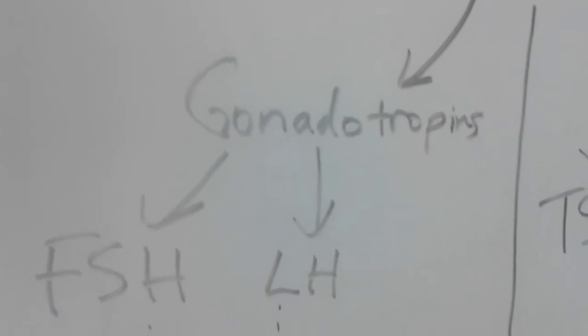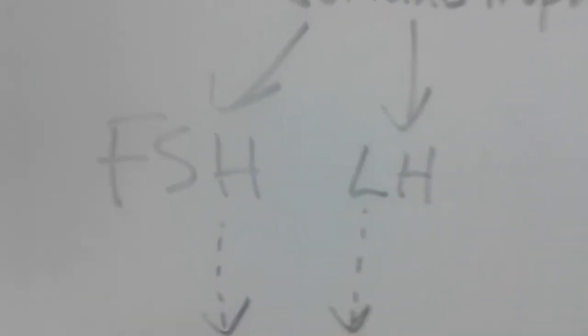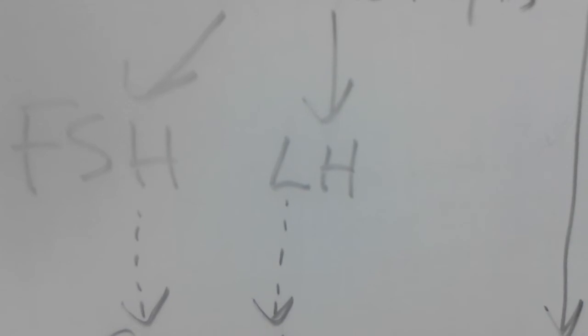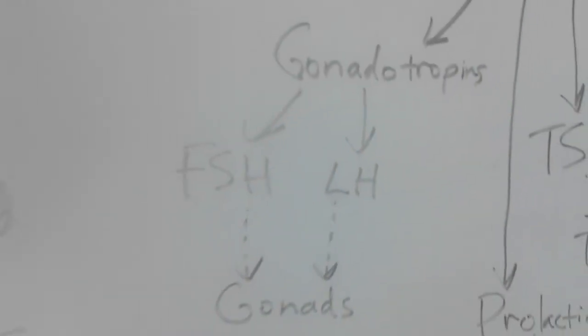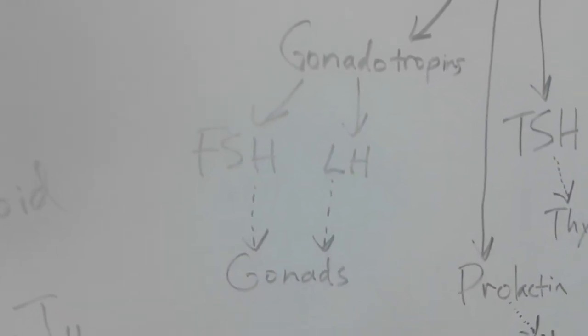Then we have gonadotropins. Remember what I said about tropins, they got something tripping. So gonadotropins, the two types of gonadotropins that we focus on are FSH and LH. FSH is follicle stimulating hormone, LH is luteinizing hormone. These two hormones both target the gonads whether you're talking about male or female it doesn't matter, these guys target the gonads.